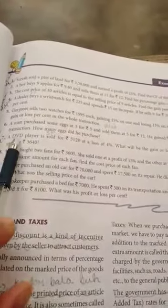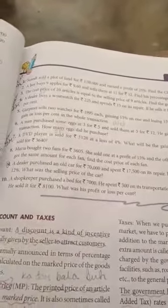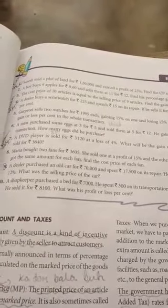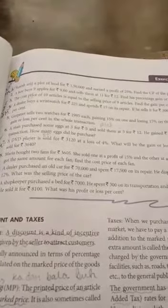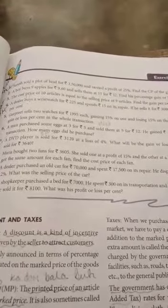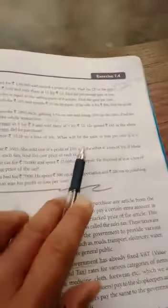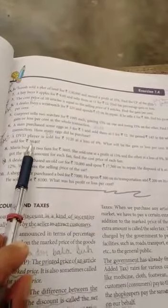Next we'll see question number seven. A DVD player is sold, meaning the selling price is equal to rupees 3120. Then he sold it at a loss, so loss percent is equal to four percent. Then after that what happened, he sold it again for rupees 3640.